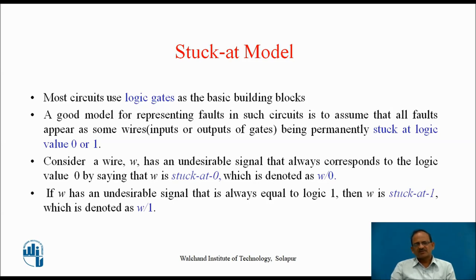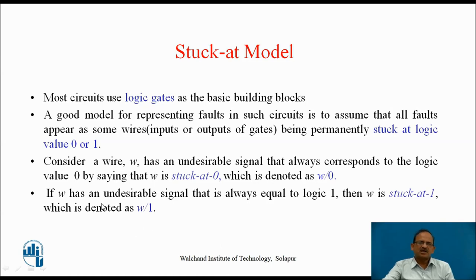For example, if a wire W has an undesirable signal that always corresponds to logic value 0, then we say the wire W is stuck at 0, which is denoted as W/0. On the same lines, if W has an undesirable signal that is always equal to logic 1, then we say that W is stuck at 1, which is denoted as W stuck at 1.